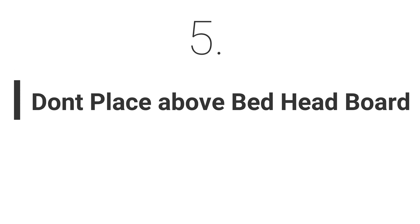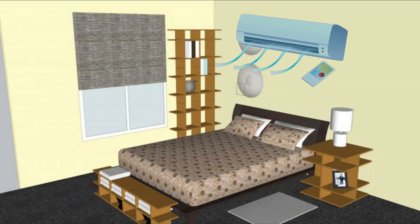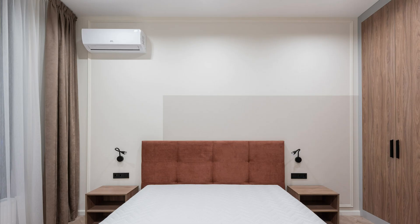Tip number five: do not place AC above the headboard of your bed. You should not install the AC indoor unit on the upper portion of the wall to which the headboard of your bed is attached. This is because in future, if there are chances of leaking water or a damp wall, the water might fall on the bed. Instead, you can install AC on a different side wall in this manner.